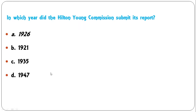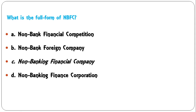In which year did the Hilton Young Commission submit its report — 1926, 1921, 1935, or 1947? The correct answer is 1926. The Hilton Young Commission, also known as the Royal Commission, submitted its report in 1926, and on this recommendation RBI was created.